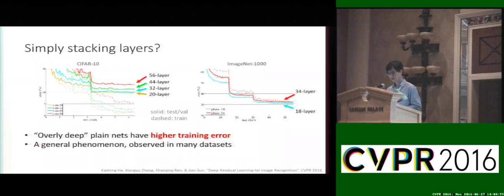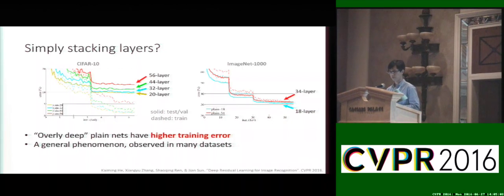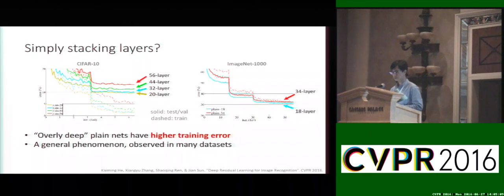We found that this is a general phenomenon observed in many datasets. On the CIFAR-10 dataset, when we increase layers from 20 to 56 the training error gets higher and higher, and on the ImageNet dataset a deeper 34-layer neural network is worse than its 18-layer counterpart.